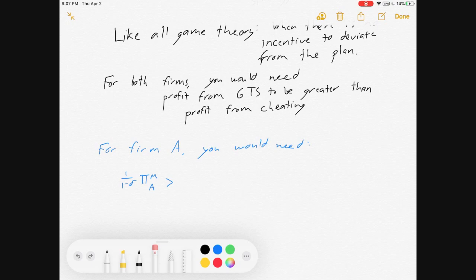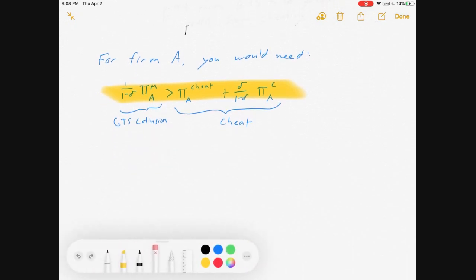So, for firm A, that means you would need to see that the discounted stream of collusive profits is greater than cheating profits plus the discounted stream of future Cournot profits. Now, we see here, because pi cheat is greater than pi M, there will be a temptation for us to give up future payoffs of decreasing collusive profit to Cournot profit, of making that switch in favor of getting a higher payoff today. And so, there's your collusion, here's your cheating. That is a really important equation, as we'll show in just a minute.